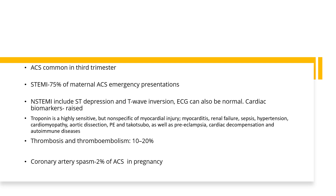Troponin could go up in conditions like myocarditis, renal failure, sepsis, hypertension, cardiomyopathy, aortic dissection, pulmonary embolism, Takotsubo, as well as preeclampsia, cardiac decompensation and autoimmune diseases with cardiac involvement. Thrombosis and thromboembolism accounts for 10 to 20% of acute coronary syndrome. Coronary artery spasm represents about 2% of acute coronary syndrome in pregnancy.